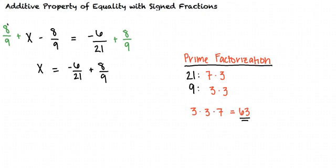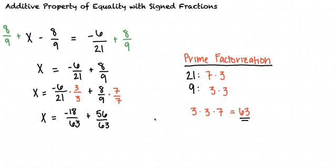That's right. So now we need to manipulate our fractions so that they have common denominators of 63. When we do this, our fractions become negative 18 over 63 and 56 over 63.